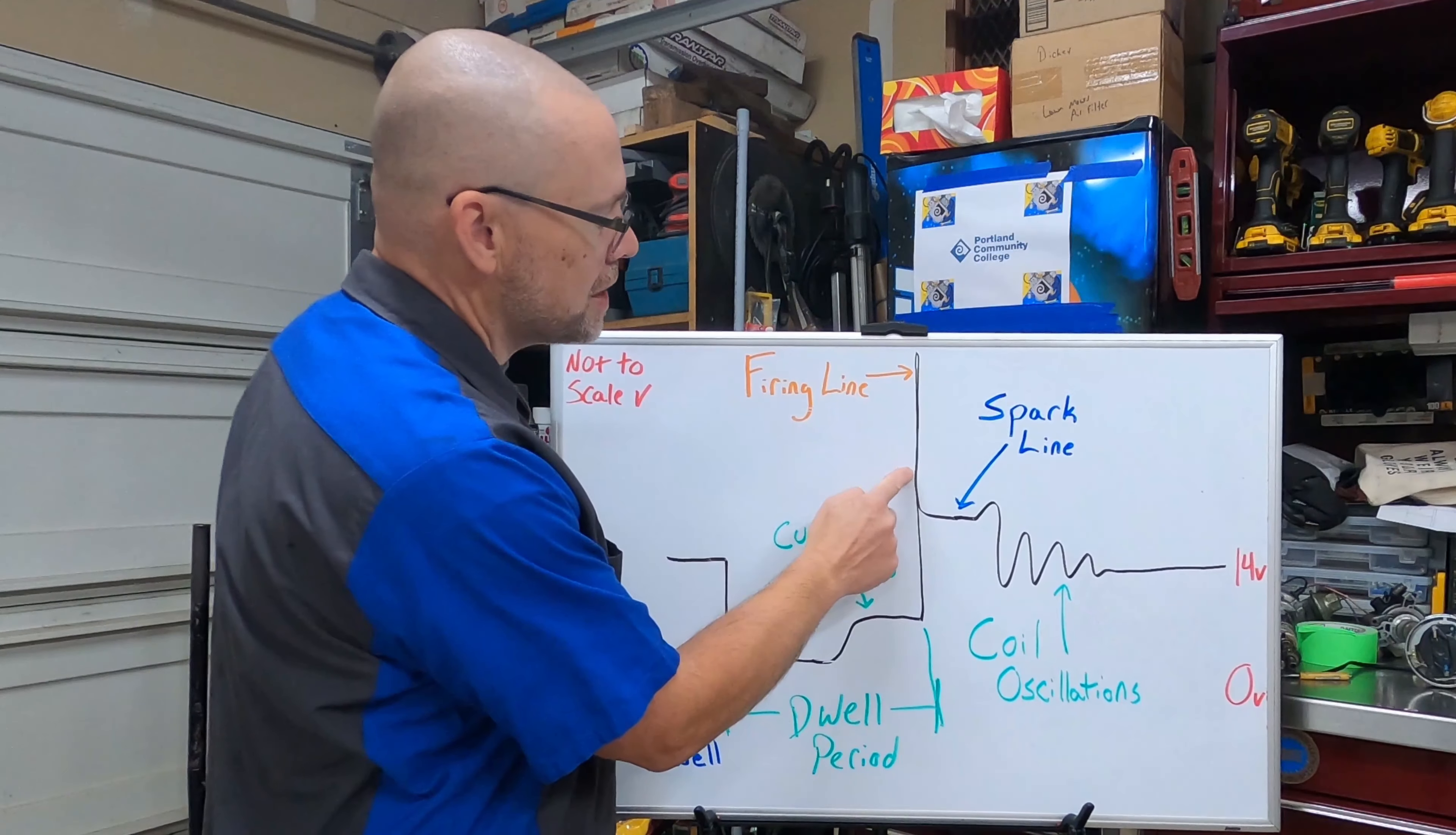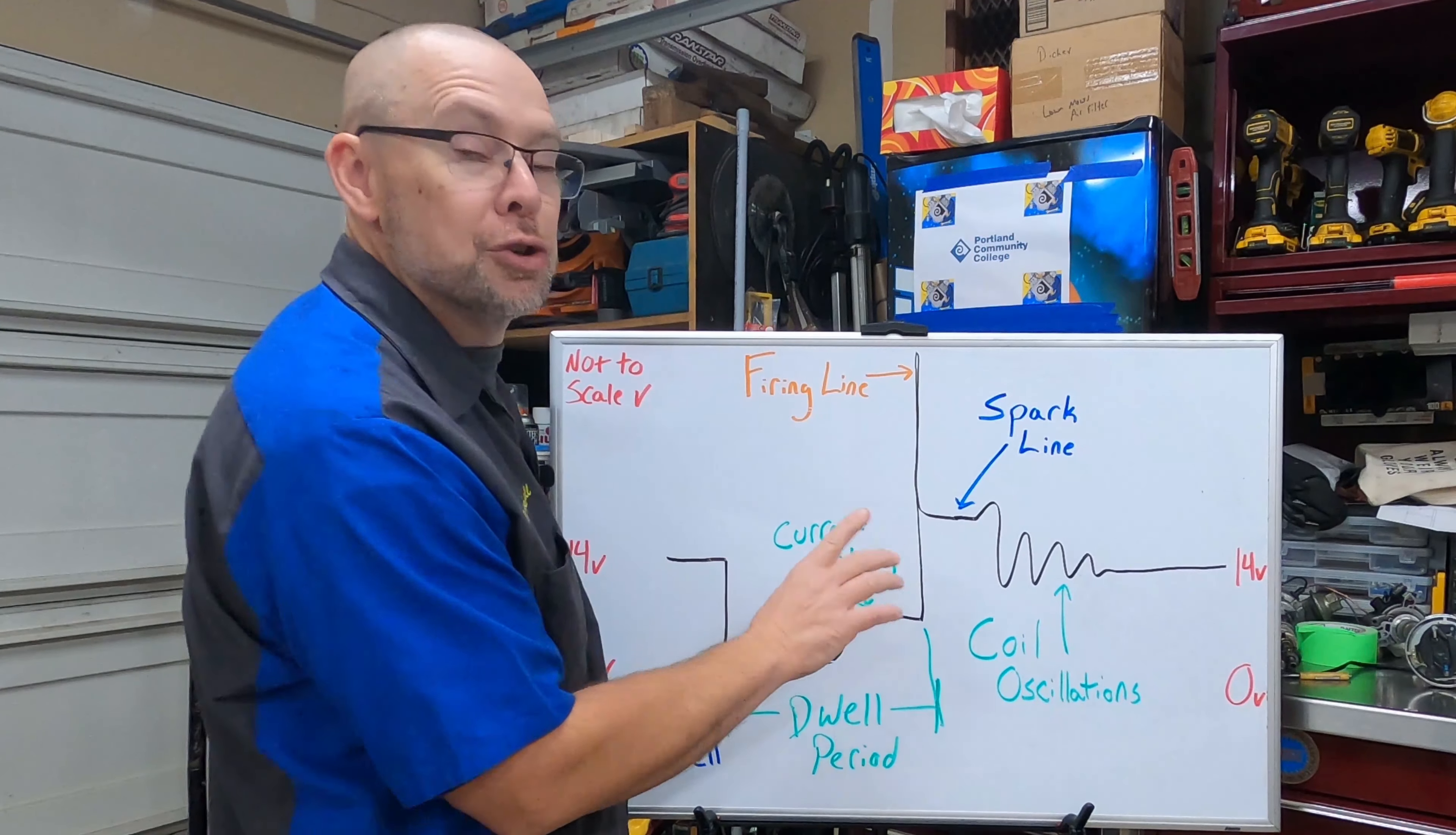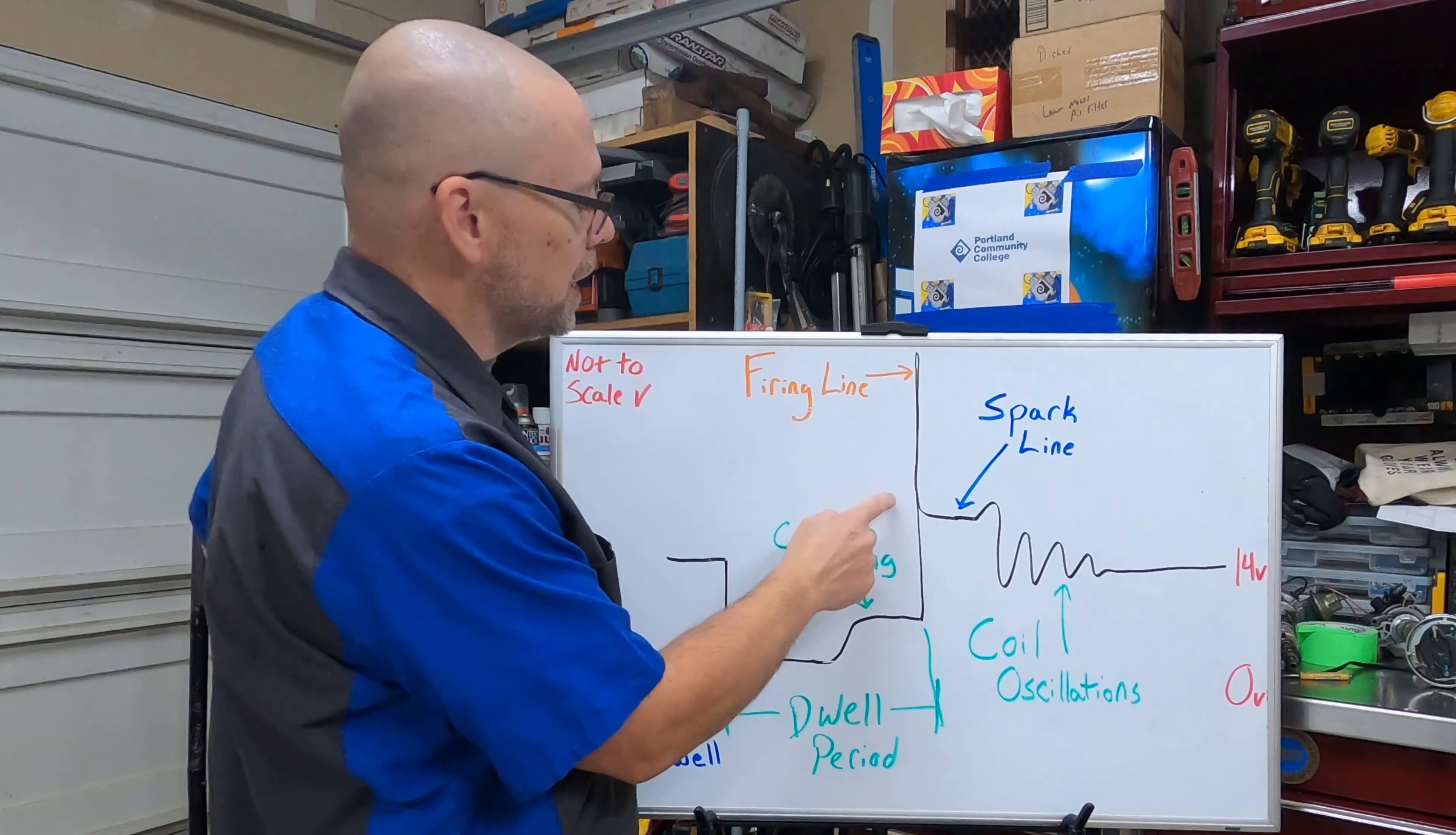In the ignition, an excessive spark plug gap, an excessive, if we have a distributor, an excessive rotor to distributor air gap, any gaps or high resistance including an open spark plug wire, open in secondary of coil, will raise this line up. In fact if we want to test the coil all we simply do is open up the spark plug wire. We take it off the spark plug, we hold it out in the open for a short period of time. This line will max out, you measure that on your scope.